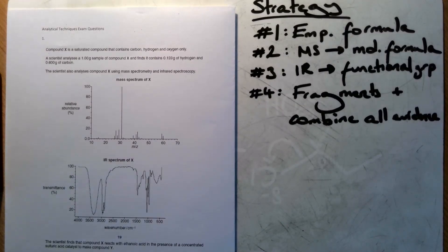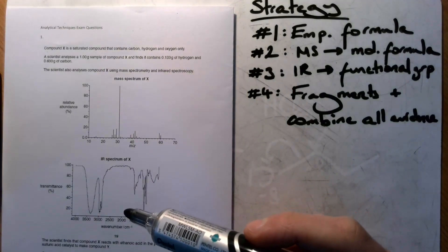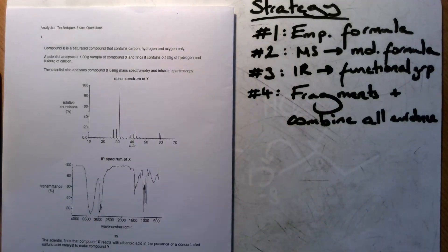Then we'll compare that to the mass spectrum and see what that tells us about the actual formula of the compound. Then from that we can go on to look at the infrared spectrum here and pick out what particular functional groups our compound could have, and so that will give us some information about the structure. And then finally we'll use all the other data available to us including the different fragments from the mass spec and other information they've given us to work out the formula.